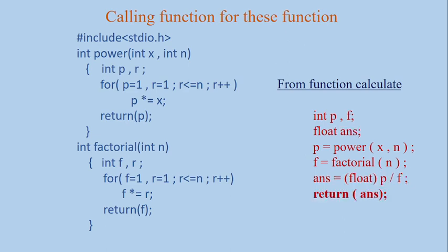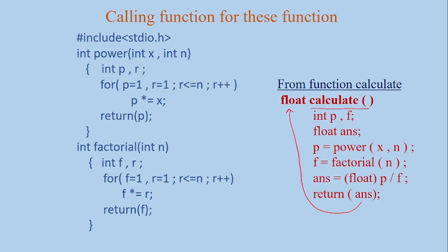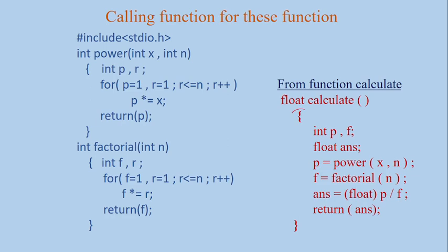This answer we want to return to the main program, so we have written 'return answer'. Now how will our function look? Because it is returning a float value, we have written 'float' before the function name 'calculate'. The function will execute completely and return the answer value within curly brackets. So from calculate function we are calling power and we are calling factorial — this is function call within a function. Now this function cannot execute directly, so we have to write a main program.